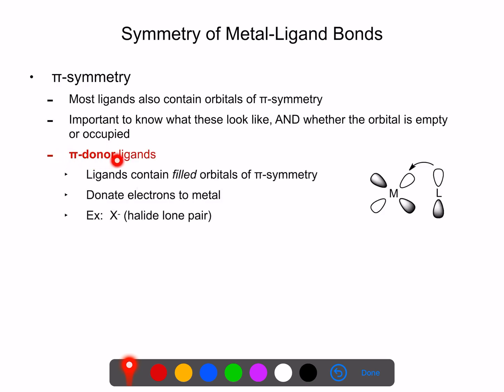we can have what we refer to as pi-donor ligands. So this is forming a pi-type bond. And the way we predict that we can form a pi-donor ligand is if the ligand has electrons in something similar to, in this case, what's shown a p-orbital.